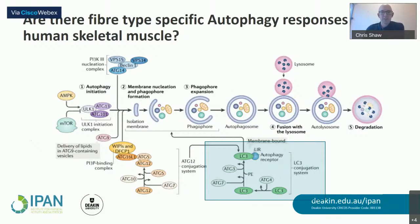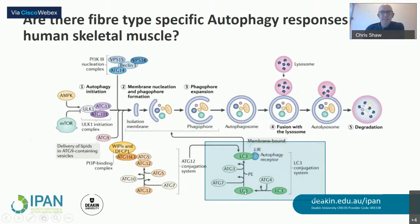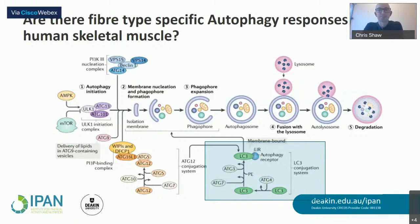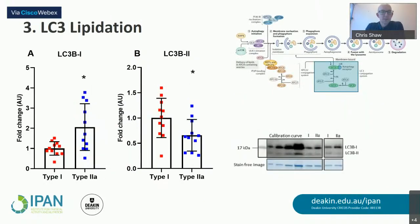The autophagy pathway is complex. A key readout is the protein LC3: LC3-I is converted to LC3-II by conjugation to the phospholipid phosphatidylethanolamine, embedding LC3 in the growing autophagosome membrane. LC3-II — the lipidated form — provides an indication of autophagosome content at any point in time. Measuring autophagy flux does not seem possible in humans, which is an important limitation to note.